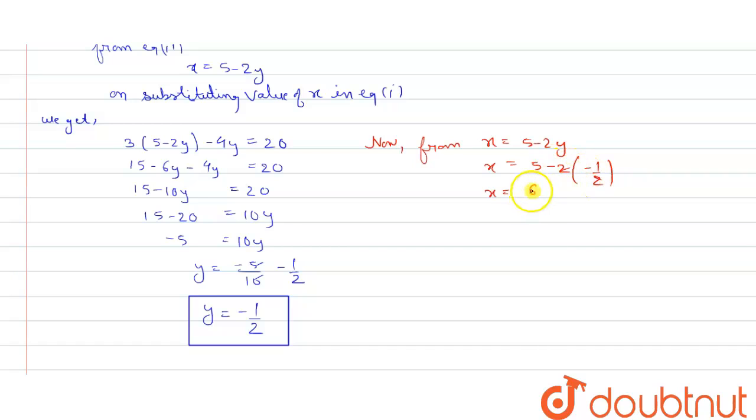minus plus, so 5 plus 1, which is 6. We got x equals to 6 and y equals to minus 1 by 2. These are our required values of x and y.